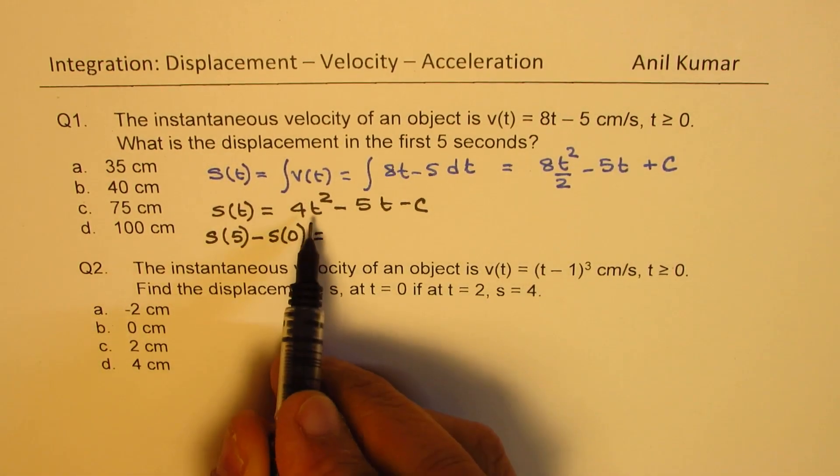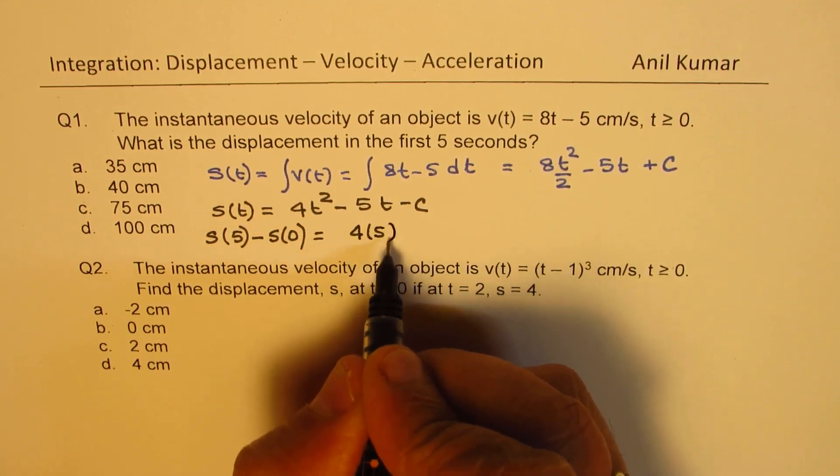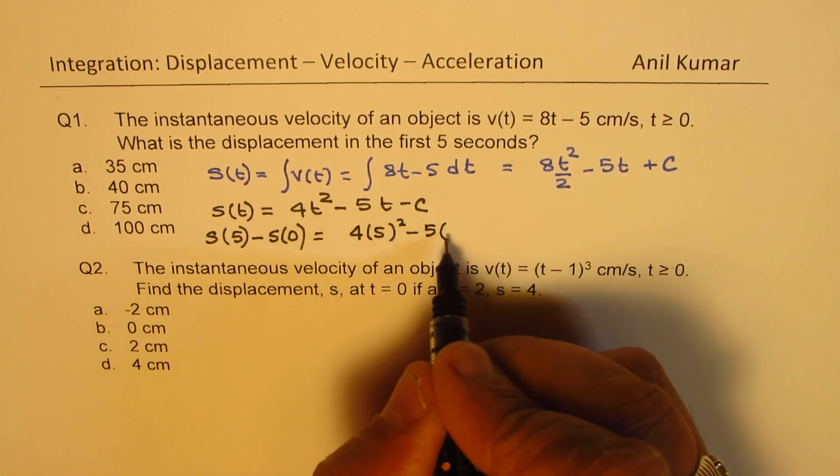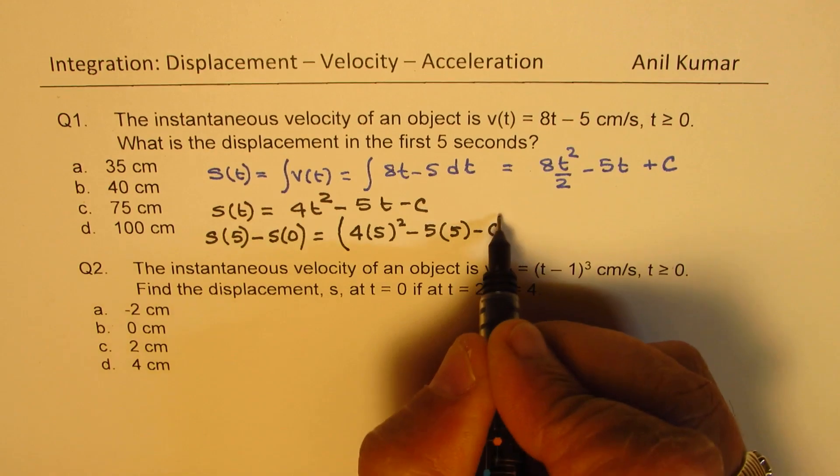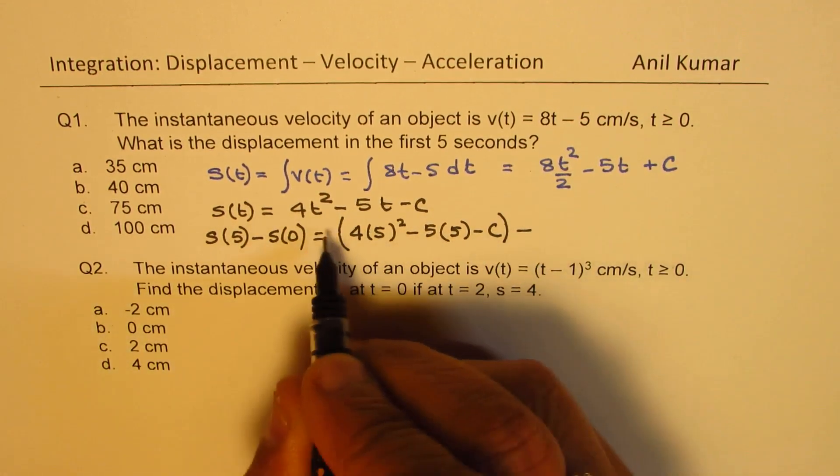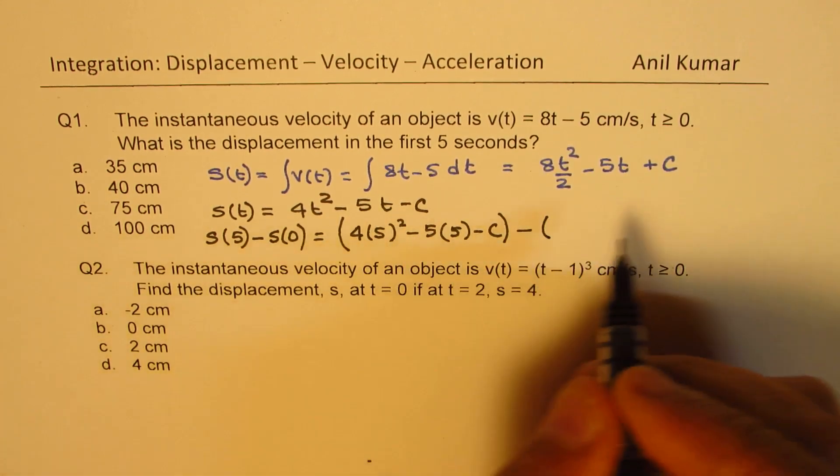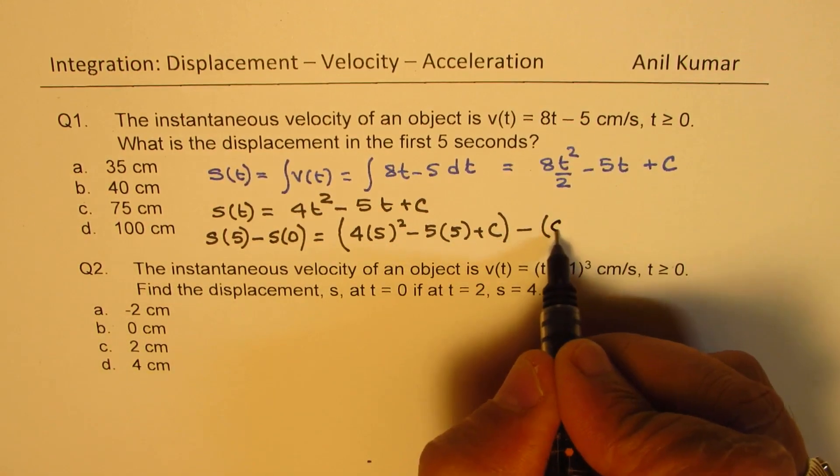So we will substitute the value 5 here. So we get 4 times 5 squared minus 5 times 5 minus c. And from this value we will take away when t is 0. So when t is 0, we are left with minus c. So well, it's good to write plus c. So we are left with c.